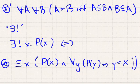...what I really mean is: 'there exists a unique set X such that P of X holds' if and only if there exists an X such that P of X holds, and if any other set Y also satisfies P, then Y is in fact equal to that set X.